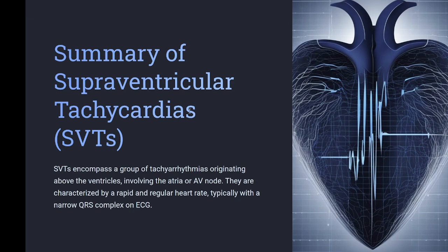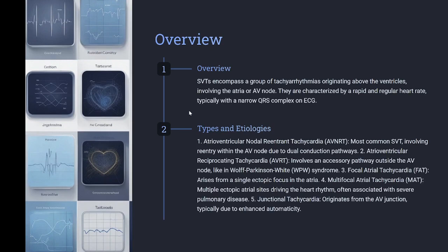Types and etiologies. 1. Atrioventricular nodal reentrant tachycardia (AVNRT): the most common SVT, involving reentry within the AV node due to dual conduction pathways. 2. Atrioventricular reciprocating tachycardia (AVRT): involves an accessory pathway outside the AV node, like in Wolff-Parkinson-White (WPW) syndrome.